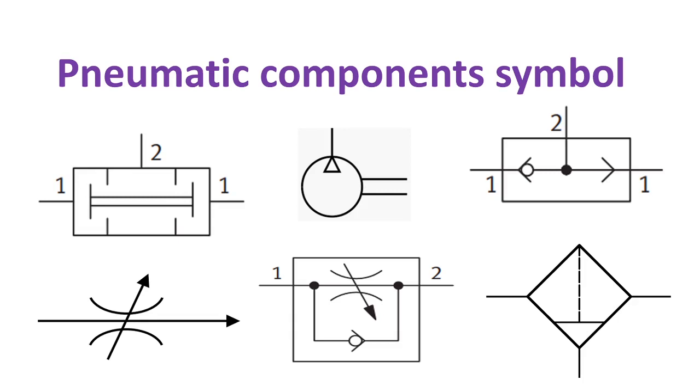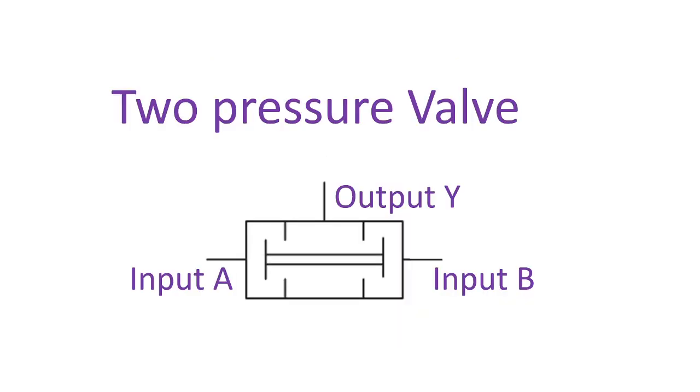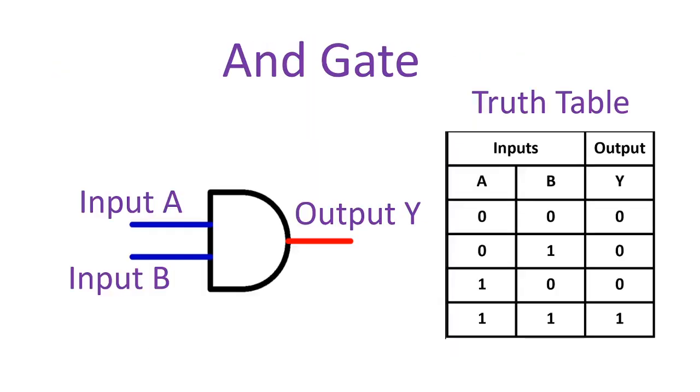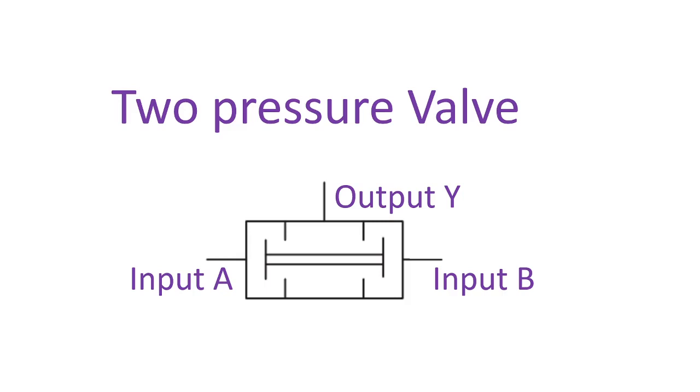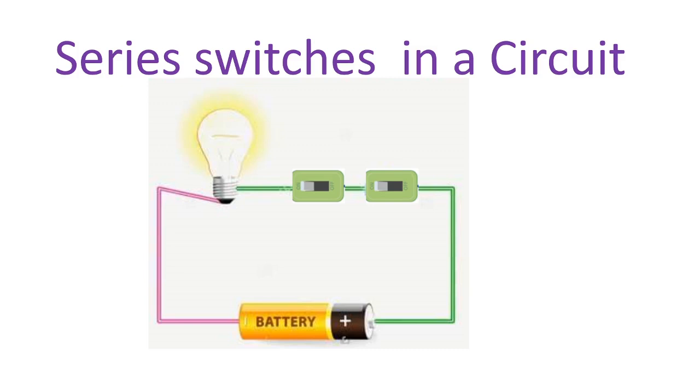Now let's proceed to our pneumatic component symbols. The two pressure valves work on the same principle with series circuit and AND gate. The output of the two pressure valve is true or high if the two pressure input A and B are true, otherwise it's false. And the equivalent series circuit, the bulb will only glow if the two switches are on. And if one of the switches are off, the light will not glow.